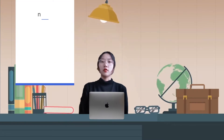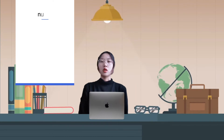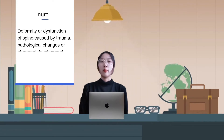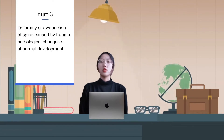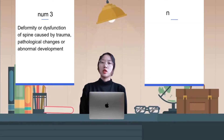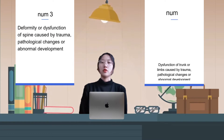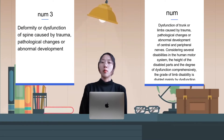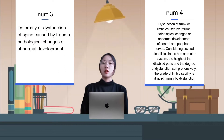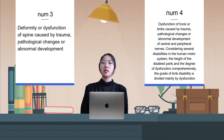3. Deformity or dysfunction of the spine caused by trauma, pathological changes, or abnormal development. 4. Dysfunction of the trunk or limbs caused by trauma, pathological changes, or abnormal development of the central and peripheral nervous system.